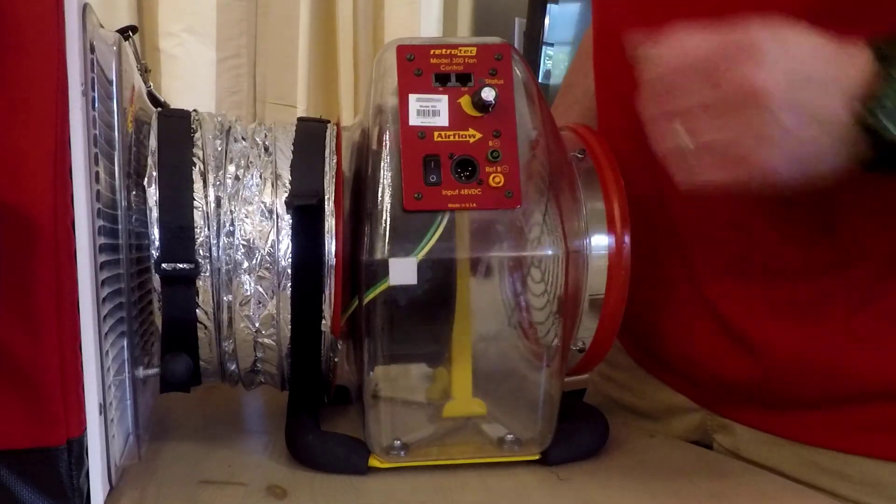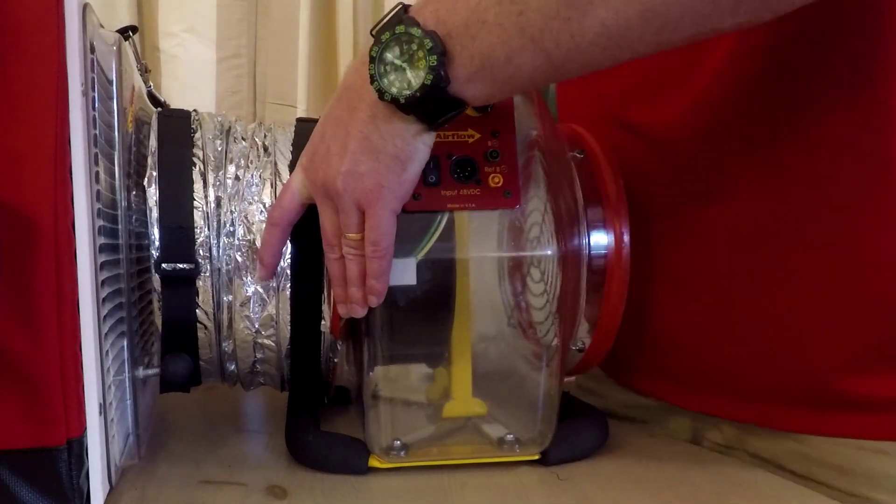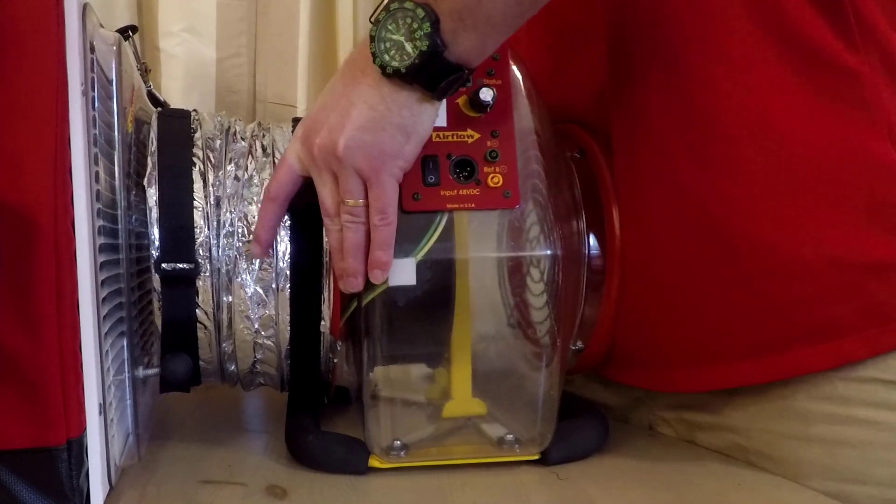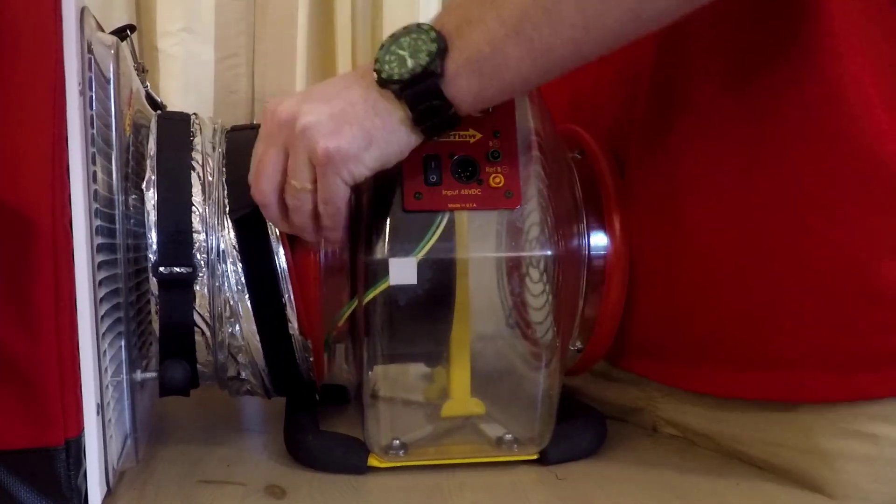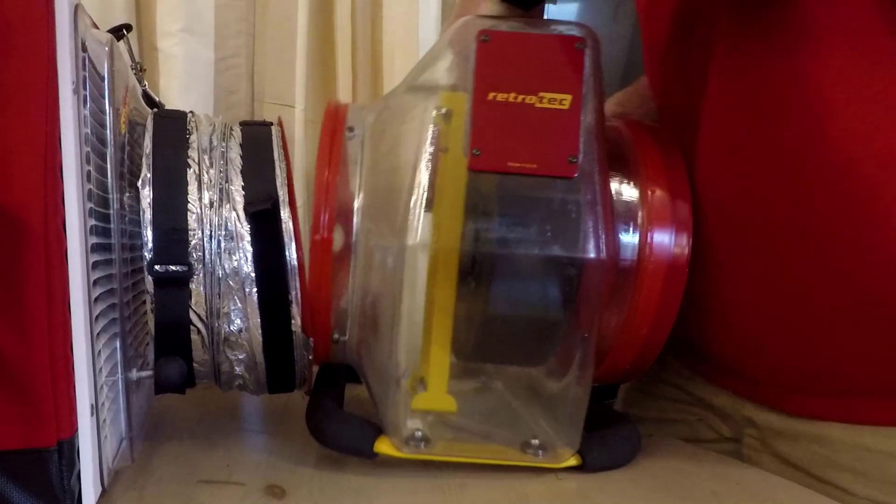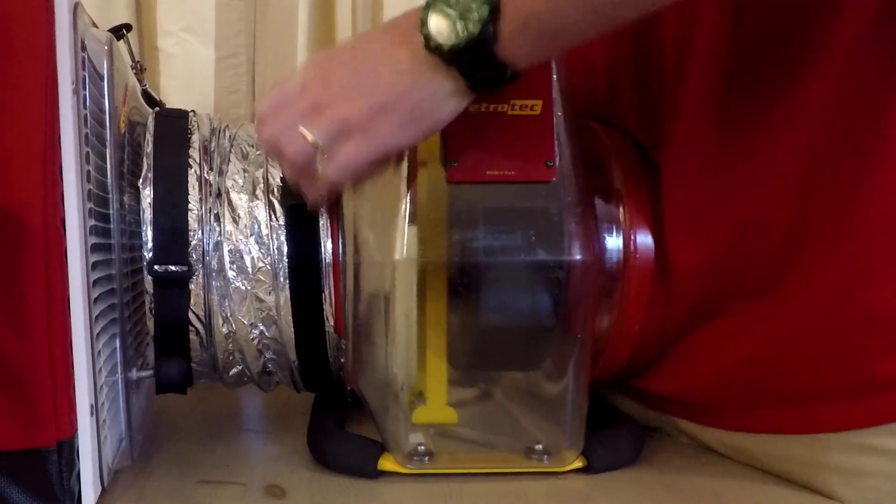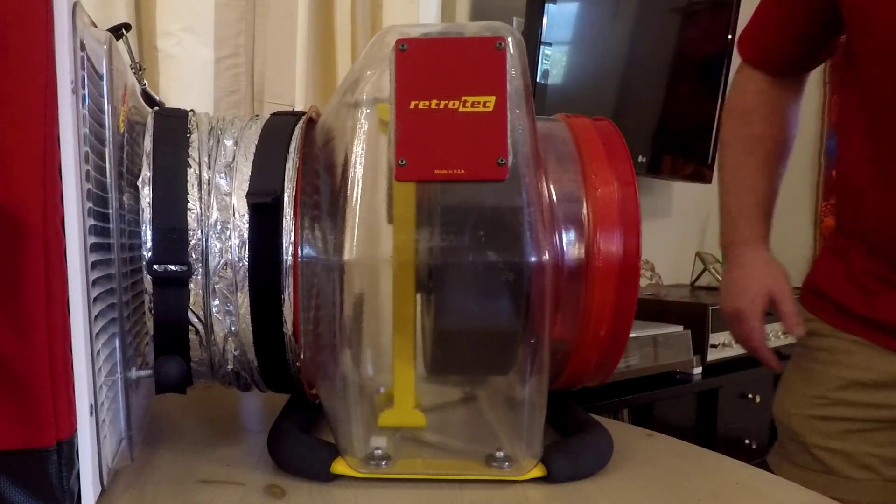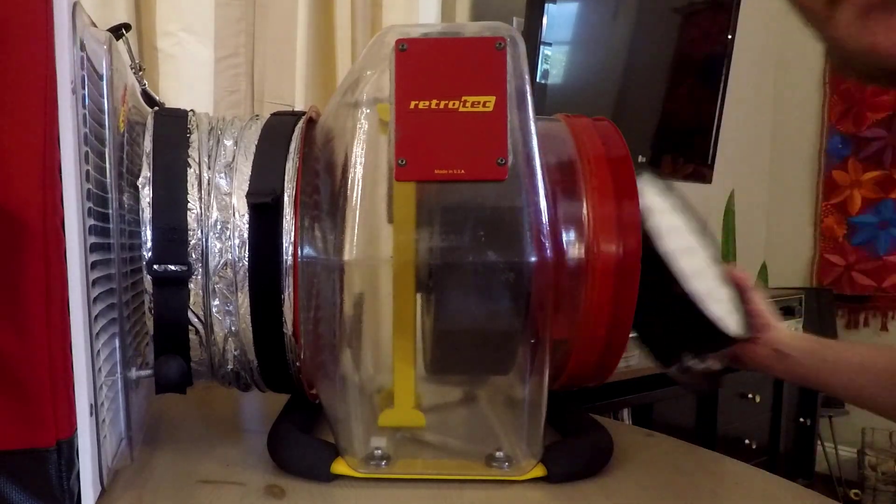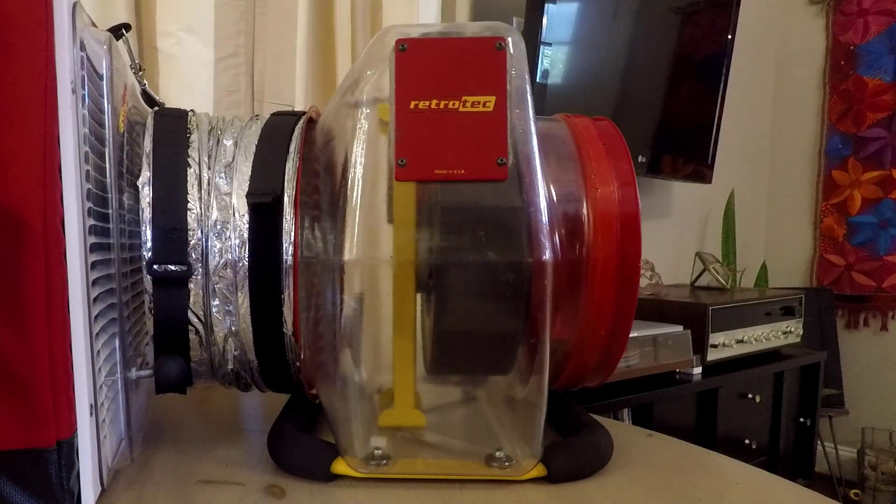So with the RetroTech duct tester, it's a lot easier to change it from pressurized to depressurized or the other way around due to this quick connect collar. So all you do is slide it off, spin it around, and snap it back on and you're finished. With RetroTech, you don't have this air straightener or anything like that that you have to add in whenever you switch fan direction. You just flip it around and turn it on and it's good to go.